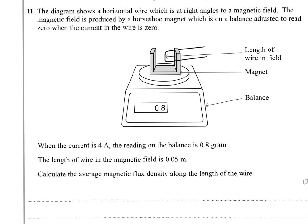The diagram shows a horizontal wire which is at right angles to a magnetic field. The magnetic field is produced by a horseshoe magnet which is on a balance adjusted to read zero when the current in the wire is zero.